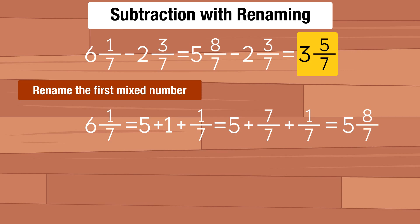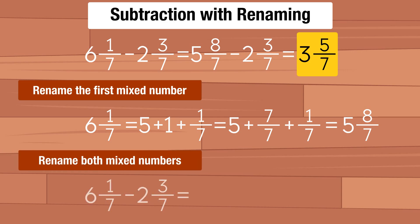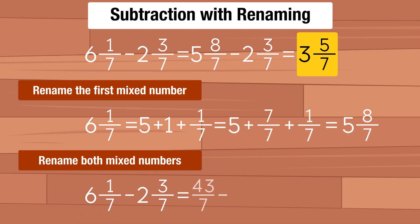The second option is to rename both mixed numbers. We turn both mixed numbers into improper fractions. 6 and 1 seventh becomes 43 over 7, and 2 and 3 sevenths becomes 17 over 7. Now we can subtract the improper fractions and we get 26 over 7. We need to turn the improper fraction into a mixed number, so the final answer is 3 and 5 sevenths.